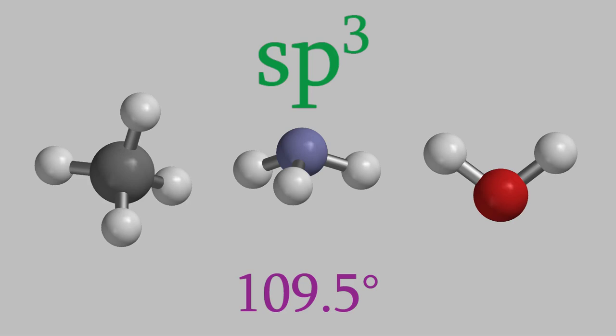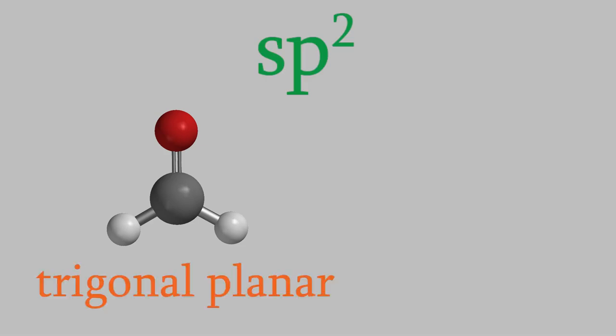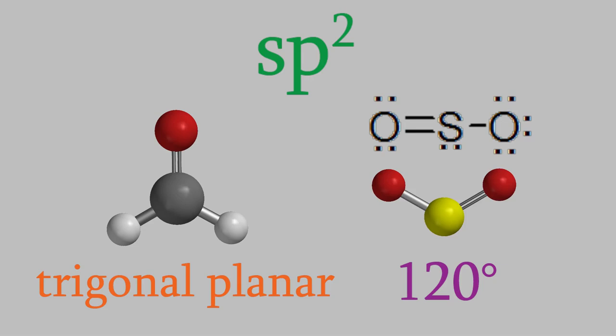So, for example, the nitrogen in ammonia and the oxygen in water both have sp3 hybrid orbitals, and that's why their bond angles are about 109.5 degrees. If the central atom has one double bond, as in this formaldehyde molecule, then we get a different hybrid orbital called an sp2 hybrid. This has a trigonal planar shape, so sp2 hybrid orbitals have a 120-degree angle between them. Just as with sp3 hybrids, sp2 hybrids can have an unshared electron pair on the central atom, as long as there's only one double bond. For example, the sulfur in sulfur dioxide has an sp2 hybrid orbital, which is why it has a bond angle of 120 degrees.